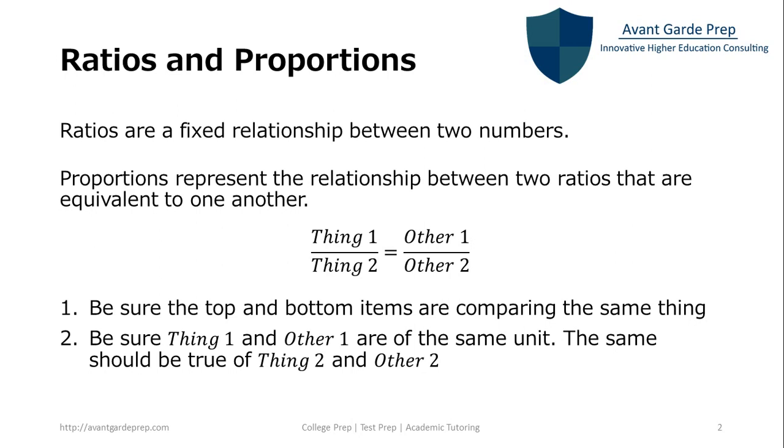A ratio is a fixed relationship between two numbers of the same type. For example, four tires per one car.